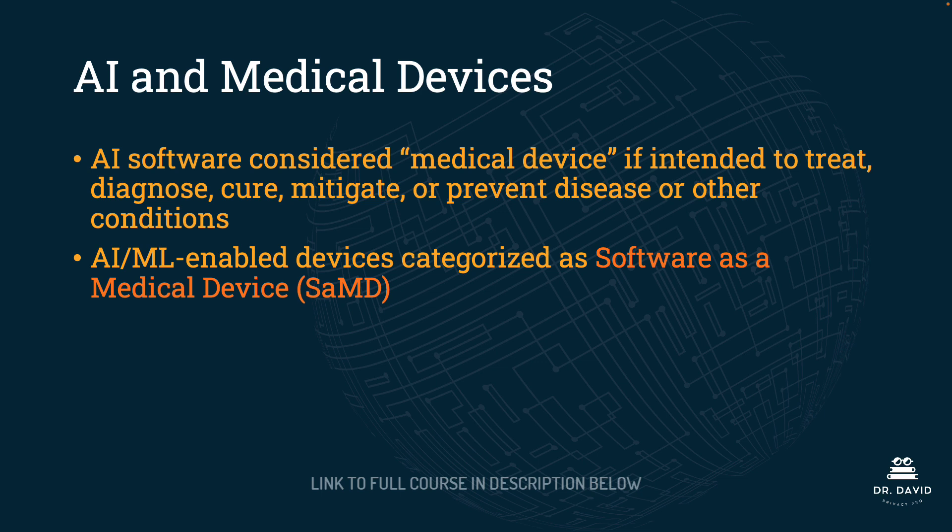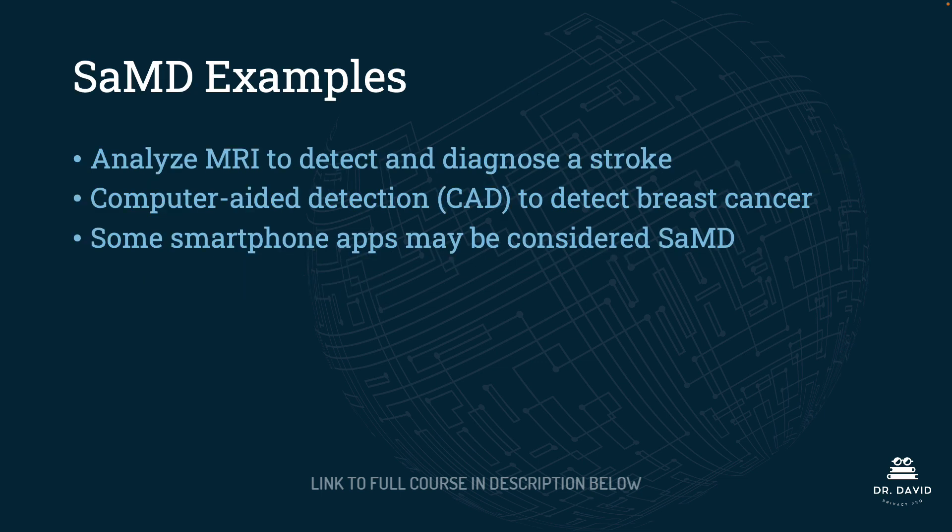If you see S-A-M-D somewhere, that is software as a medical device. Examples of software as a medical device include using an AI system to analyze MRI to detect and diagnose a stroke, using a computer-aided detection system to detect breast cancer, and an important consideration is that some smartphone apps may be considered software as a medical device.